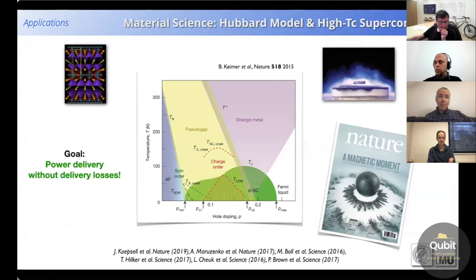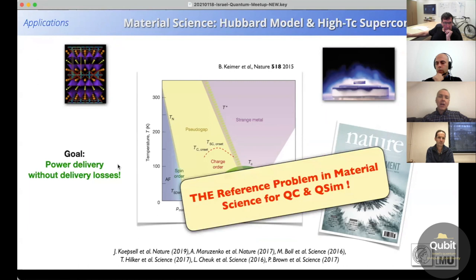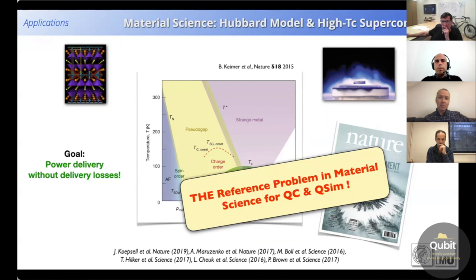Now, one model system that plays a very important role in the context of material science is the model of interacting electrons on a lattice, the so-called Hubbard model, which is believed to have strong connections to high-TC superconductors. So there's an immediate, very big goal here to basically understand how we can deliver power without losses in these systems, but still this system defies understanding. It's like the reference model we want to basically understand. I think we'll see a lot of systems try to solve this big problem in material science as kind of the guinea pig model to show how good your system is.